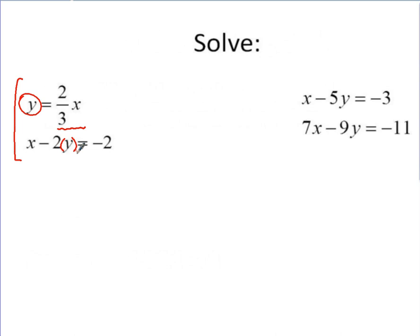So when I plug in, I've got x minus 2 times y, which is 2/3 x. That's the expression that replaces y. That's going to equal negative 2. If you're doing this correctly, you set up an equation that you can solve that just has one variable in it. So as I go through and solve this, I've got x. All right, this is 2 over 1, so that's going to be minus 4/3 x equals negative 2.